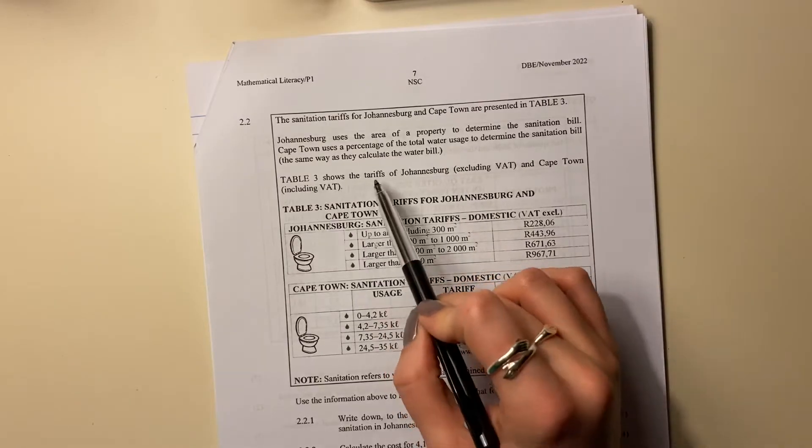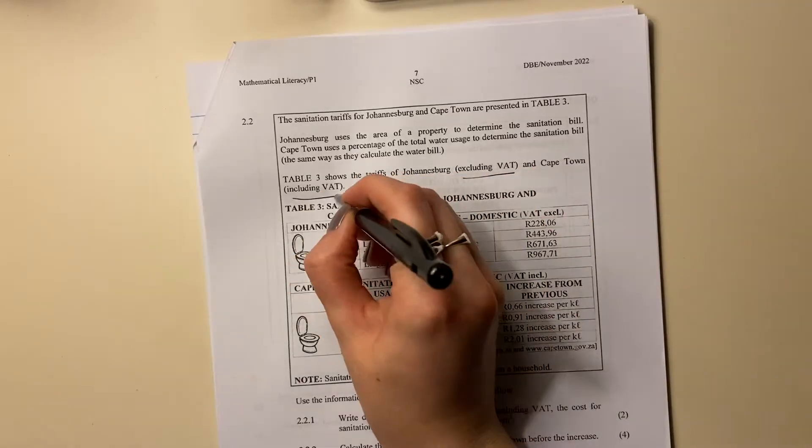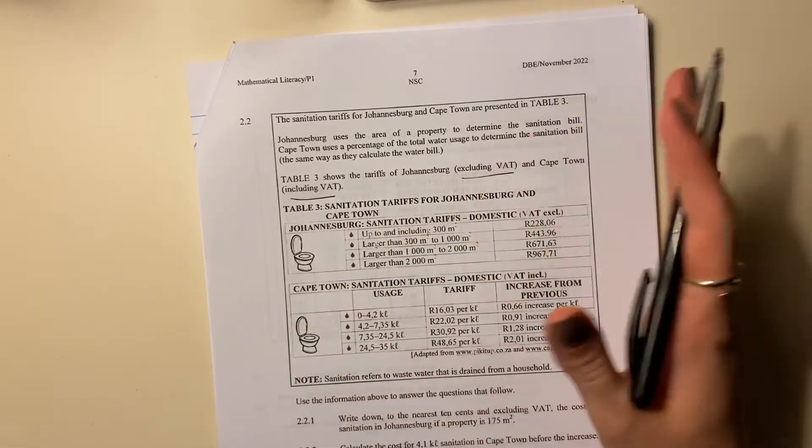Then it says table three shows the tariffs of Johannesburg excluding VAT, importantly, and Cape Town including VAT. So we're probably going to have to do something with that, right?